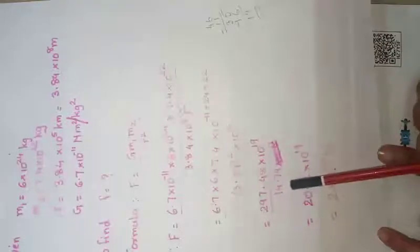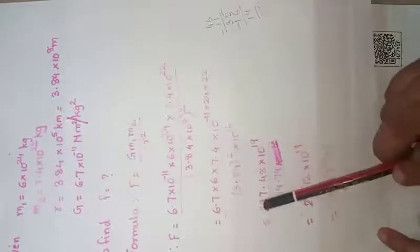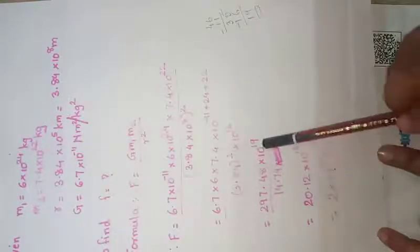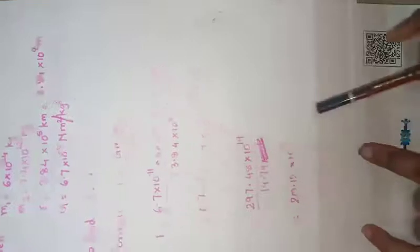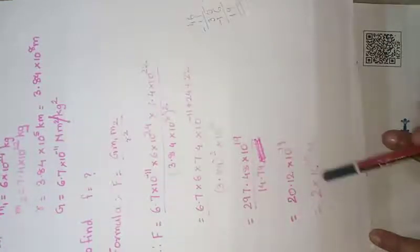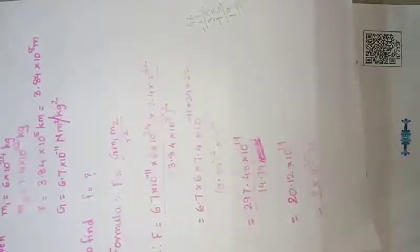Here in the next step, I have written 10¹⁹. 3.84 squared becomes 14.74. When we divide 297.48 by 14.74, we get 20.12×10¹⁹. Taking into a round figure, we get 2×10²⁰ Newton, that is the force between earth and moon.